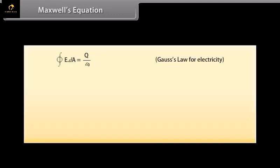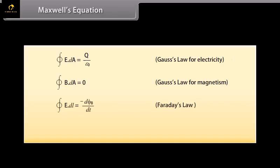Maxwell's equation. The following four equations called the Maxwell equation are the fundamental equations in electromagnetism. Gauss law for electricity: closed integral of E dot DA is equal to Q by epsilon naught. Gauss law of magnetism: closed integral of B dot DA is equal to 0. Faraday law: closed integral of E dot DL is equal to minus D upon DT of phi B. Ampere-Maxwell's: closed integral of B dot DL is equal to mu naught Ic plus mu naught epsilon naught D upon DT of phi E.